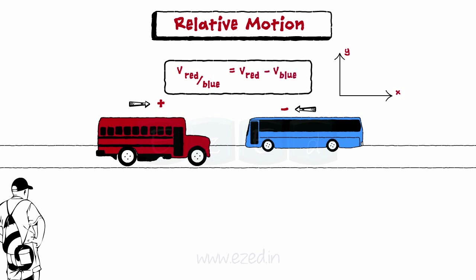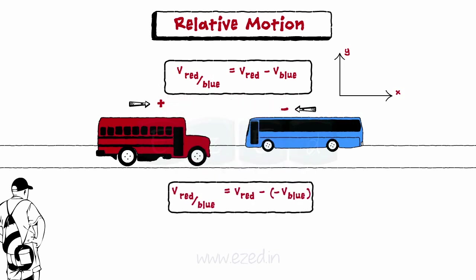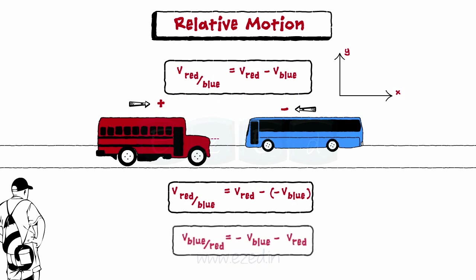Since the velocity of the blue bus is negative, the relative velocity of the red bus with respect to the blue bus is given by the following equation. And the relative velocity of the blue bus with respect to the red bus is given by the following equation.